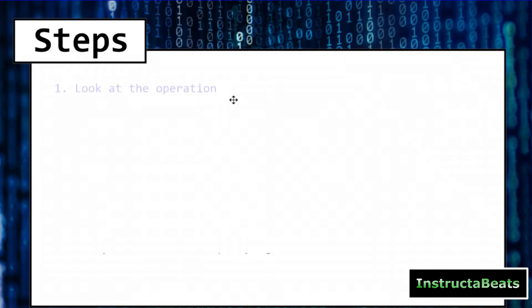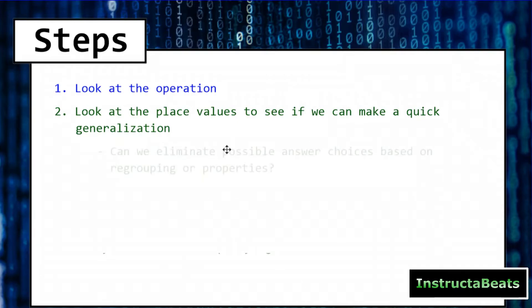The first step we're going to do, we're going to look at the operation. Now today it's going to be all addition, but when you come to these cryptarithm puzzles, you need to know, am I adding, am I subtracting, am I multiplying, am I dividing? Because that's going to help you understand what you need to do for step number two, which is we want to look at the place values and see if we can make a quick generalization. Can we eliminate possible answer choices based on regrouping or properties of that operation?